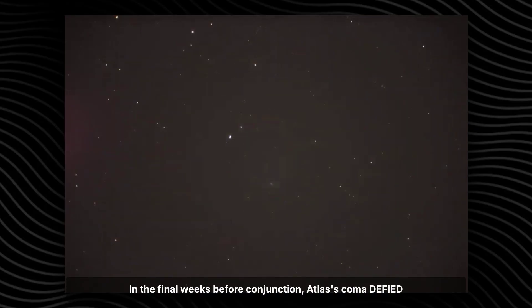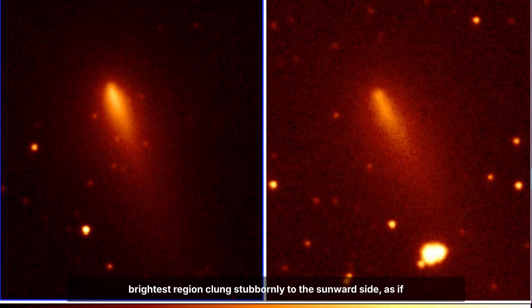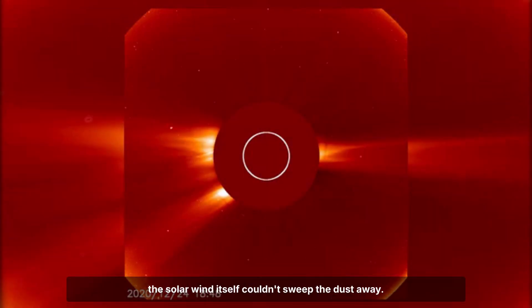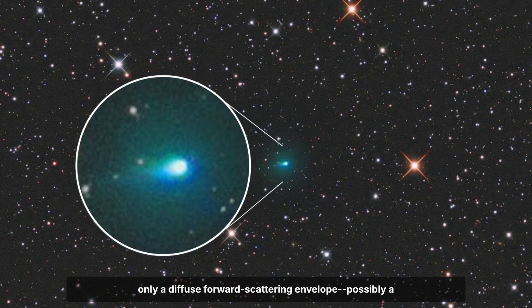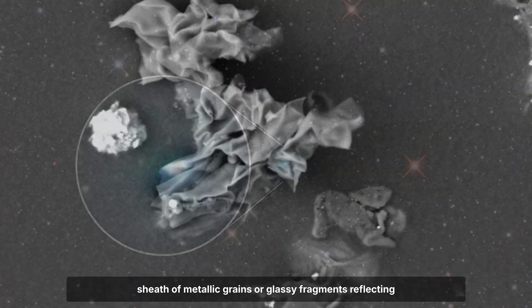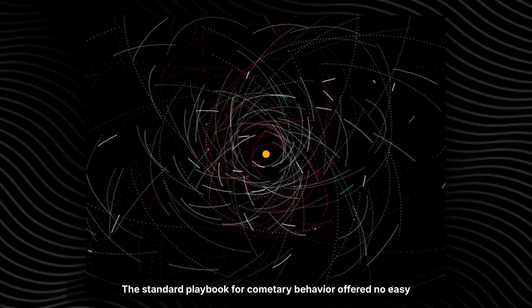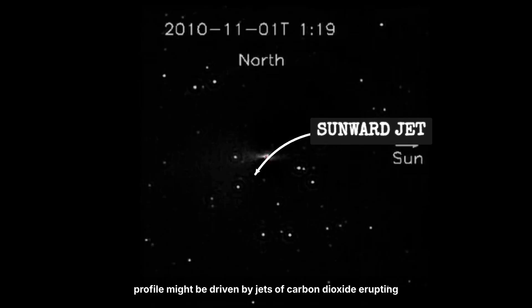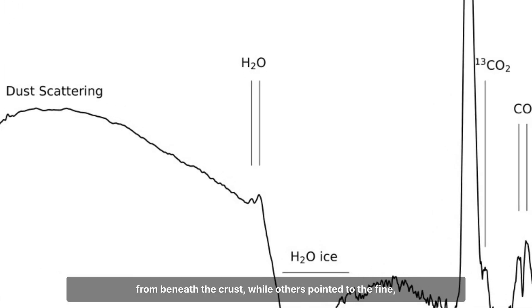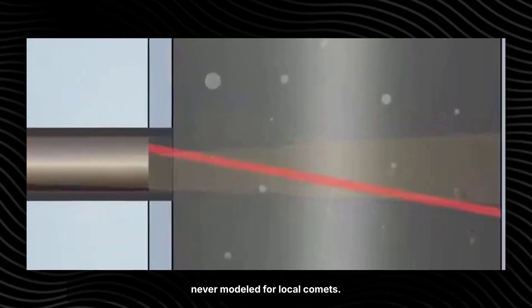In the final weeks before conjunction, Atlas's coma defied every familiar pattern. Instead of trailing a classic tail away from the sun, the brightest region clung stubbornly to the sunward side, as if the solar wind itself couldn't sweep the dust away. High-resolution images revealed no sharp anti-solar tail, only a diffuse forward scattering envelope, possibly a sheath of metallic grains or glassy fragments reflecting sunlight straight back toward Earth. The standard playbook for cometary behavior offered no easy explanation. Some teams speculated that the coma's unusual brightness profile might be driven by jets of carbon dioxide erupting from beneath the crust, while others pointed to the fine, metal-rich dust as the culprit.